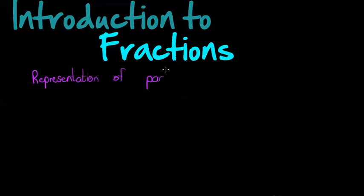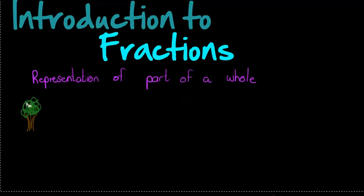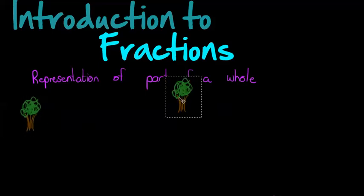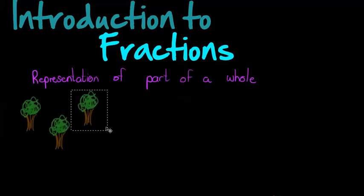With numbers, we can easily say there is one tree, or if I copy that tree I might have three trees. But the thing about whole numbers is that I can only represent whole, complete things. So obviously when I talk about the number two, it refers to two whole things.